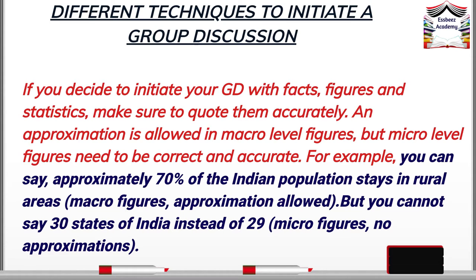Micro figure levels, however, need to be correct and accurate. For example, you can say approximately 70% of the Indian population stays in rural areas — those are macro figures, so approximation is allowed. But you cannot say 30 states of India instead of 29 — those are micro figures, and no approximations are permitted.